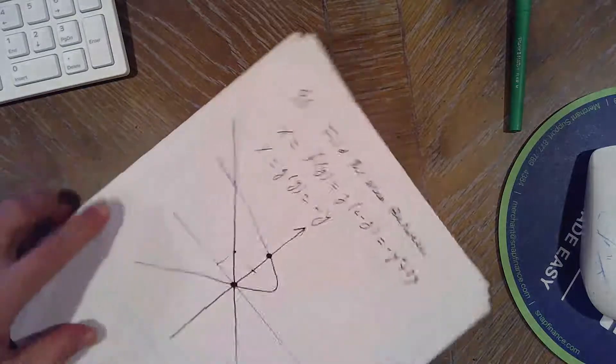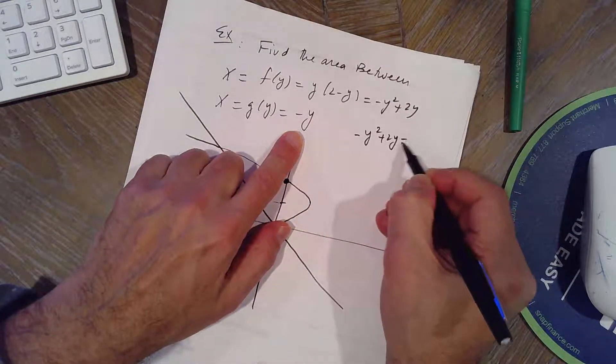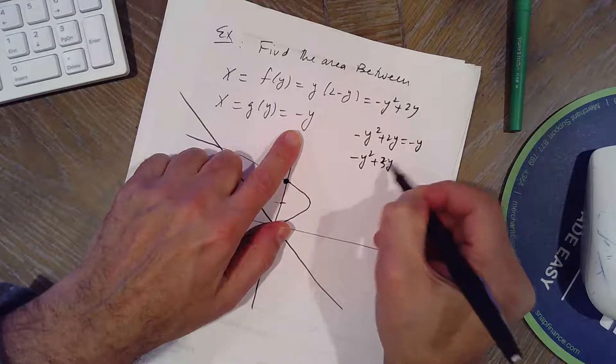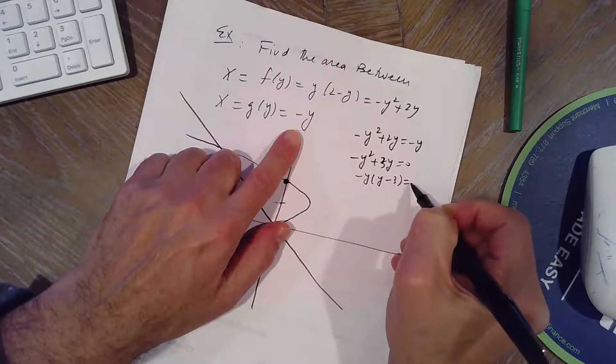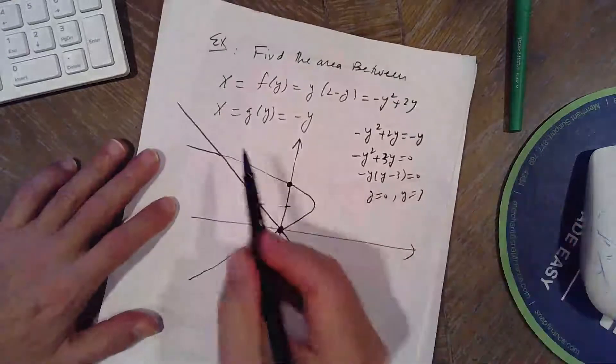And X equals 0 at another point. Let's see where they cross. Negative Y squared plus 2Y equals negative Y, negative Y squared plus 3Y equals 0, so they cross at Y equals 0 and Y equals 3.